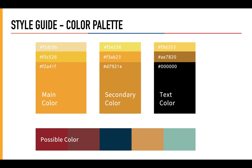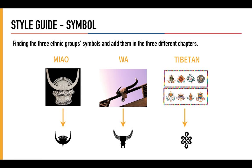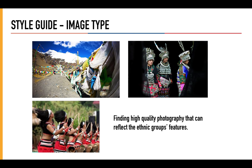This is my style guide. You can see the color and typeface that I use in the ebook. I found the three ethnic groups' symbols and added them in the three different chapters. For the images, I mainly found high-quality photographs that can reflect the ethnic minorities' features.